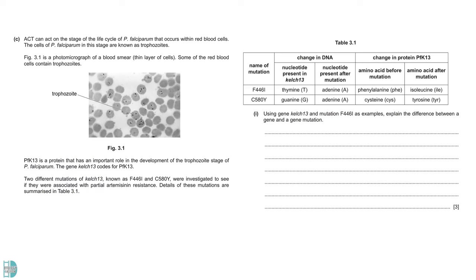In part C, you have a photomicrograph of a blood smear that contains trophozoids. Then, you have a passage about a protein called PFK13, which is important for the development of trophozoid. There is also a table showing you two mutations on the gene codes for this protein. Both mutations lead to artemisinin resistance.